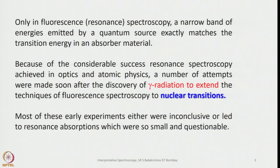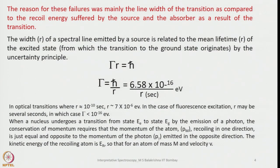Because of the considerable success resonance spectroscopy achieved in optics and atomic physics, a number of attempts were made by scientists soon after the discovery of gamma radiation to extend its utility in fluorescence spectroscopy to nuclear transitions. Most of these early experiments either were inconclusive or led to resonance absorptions which were so small as to be questionable. The reason for these failures was mainly the line width of the transition compared to the recoil energy suffered by the source and absorber.